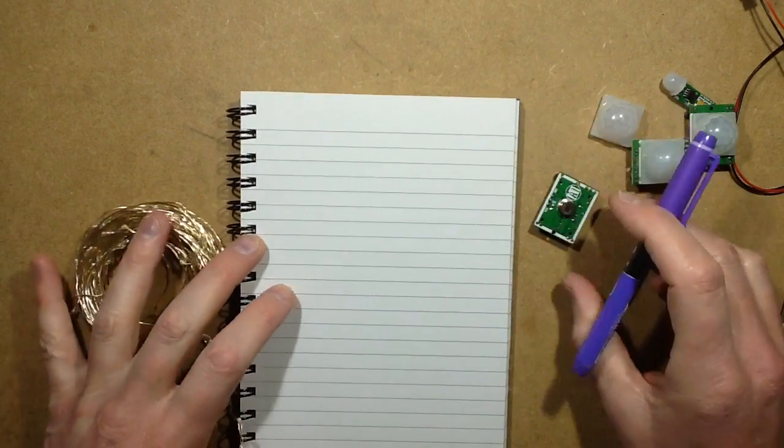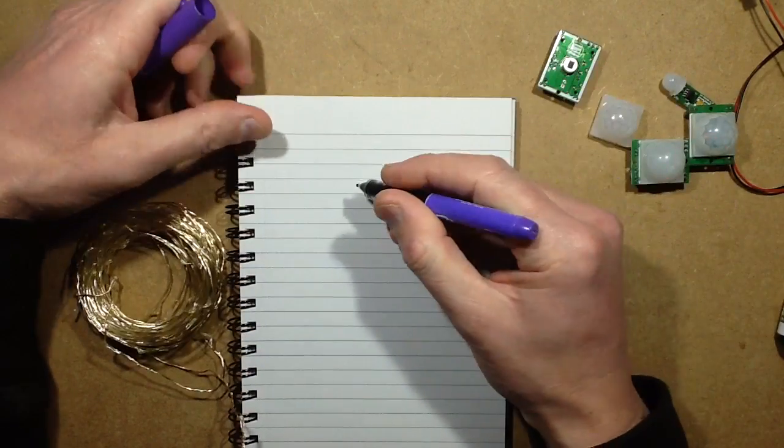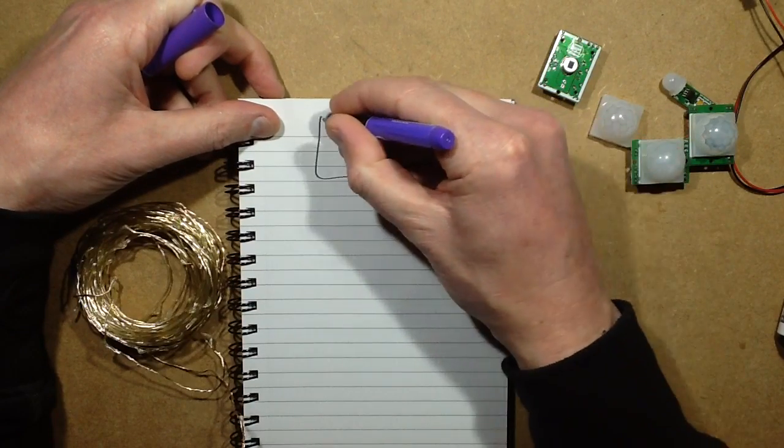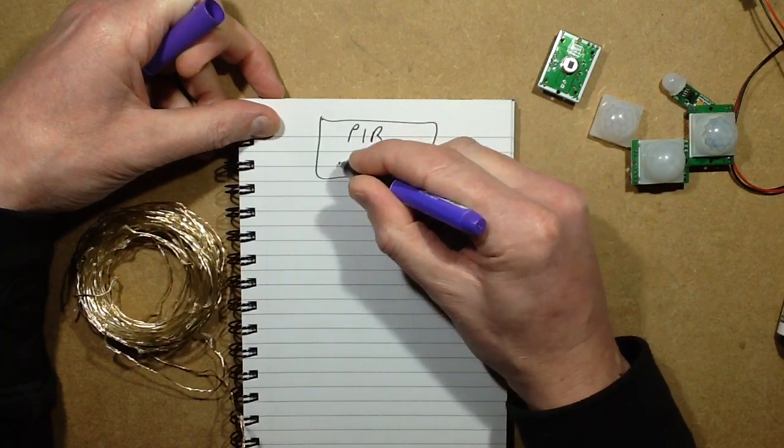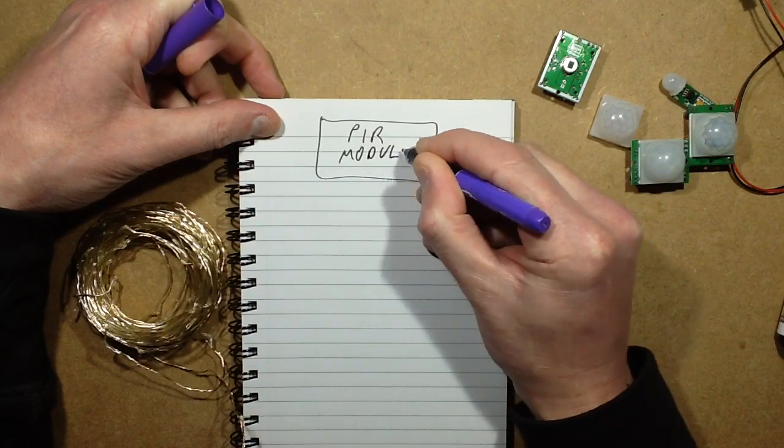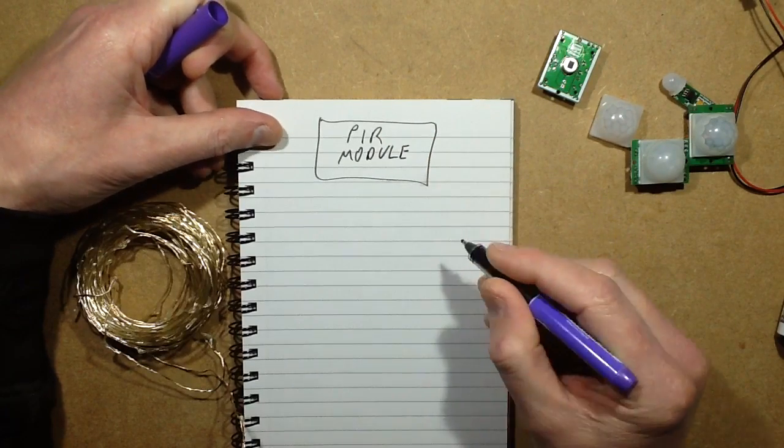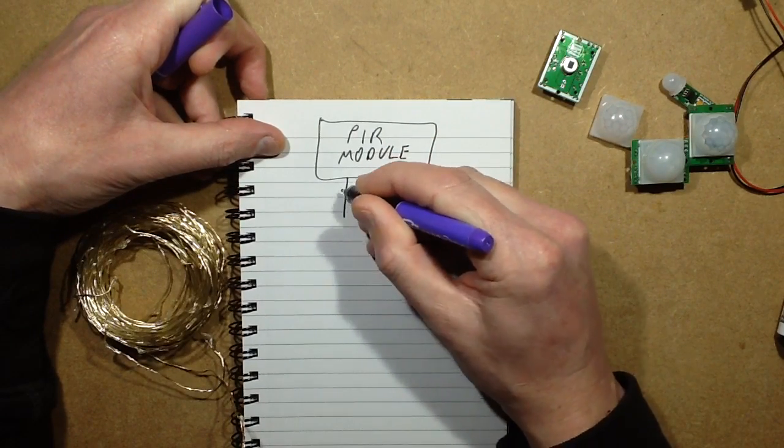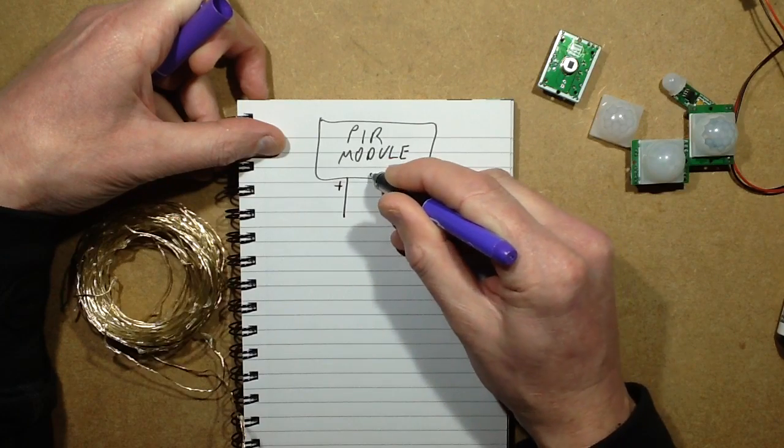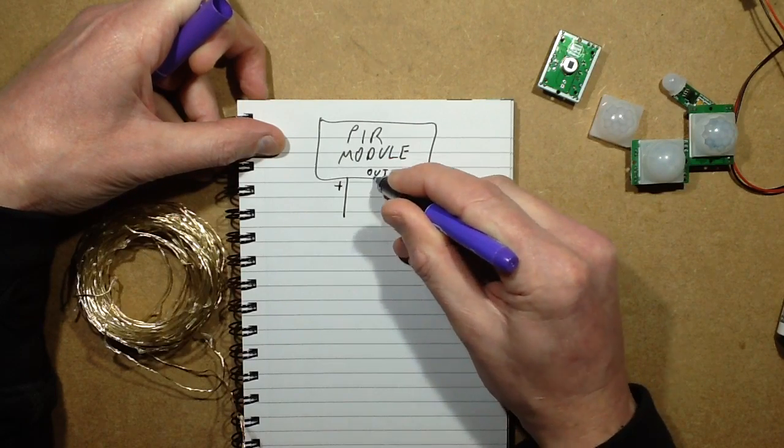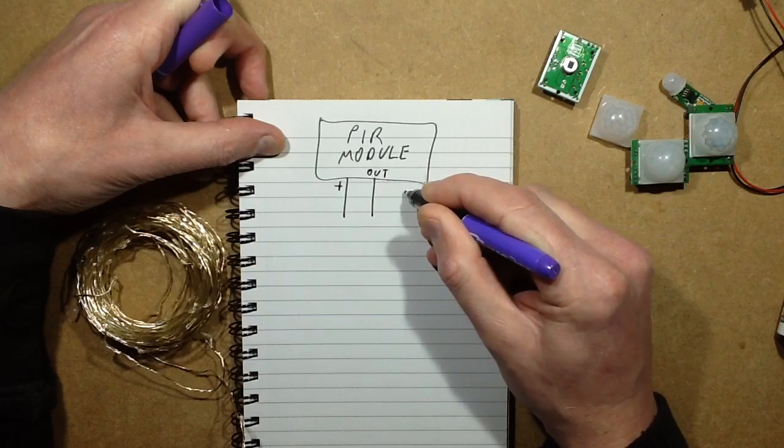To connect them, these sensors have three pins. Let's go PIR module. They have a positive pin, an output pin usually in the middle, and a negative pin.